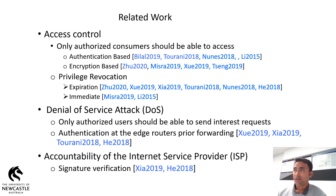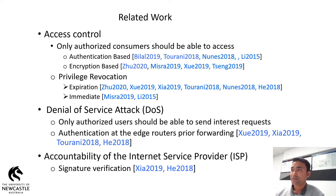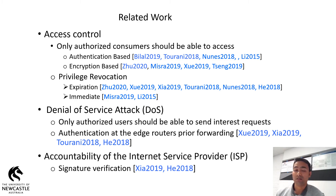There are several works that try to address the access control issues. These works can be divided into two groups: one is authentication-based and the other is encryption-based. In authentication-based schemes, consumers are authenticated first before sending the data packets. In encryption-based schemes, the contents are encrypted and authorized consumers are given secret keys so that they can decrypt them. In access control, privilege revocation is also an important requirement. The privileges of the consumers can be revoked in two ways: one is expiration and the other is immediate. In expiration-based revocation, consumers will be automatically revoked after their validity period expires.